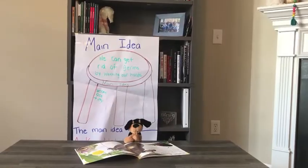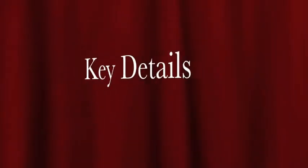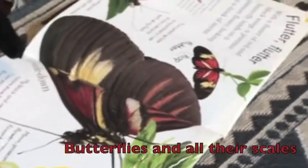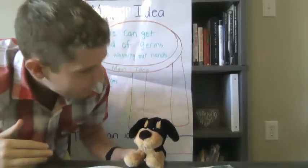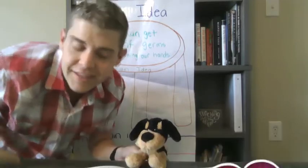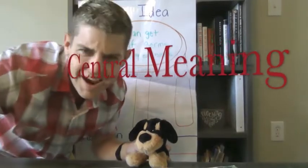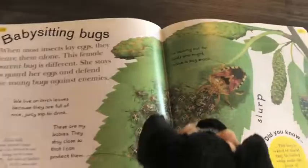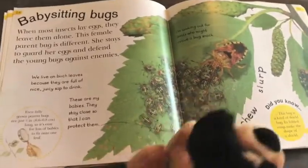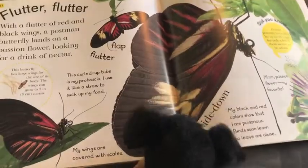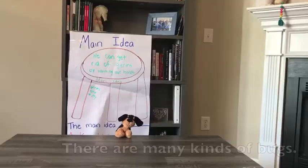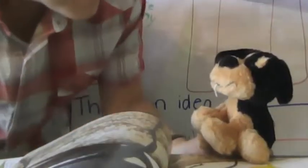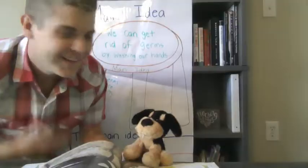Hey look, this book has lots and lots of key details. Could the main idea be butterflies and all their scales? My friend, that's close, but that is a key detail — now we need the central meaning. Let me get back in the book. Every page has a different kind of bug. Is the main idea: there are many kinds of bugs? Very much — yes! I knew I could do it!